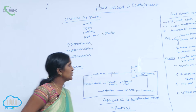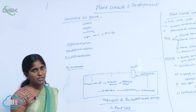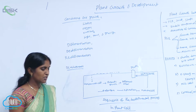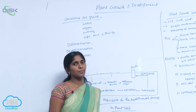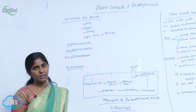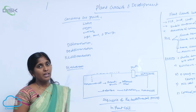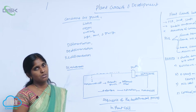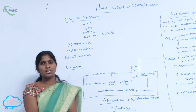Plants also show another phenomenon, that is de-differentiation. The differentiated cell loses its capacity of dividing, but it regains that capacity and divides and matures. This phenomenon is called de-differentiation.